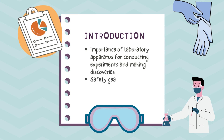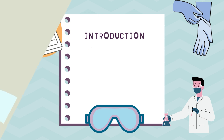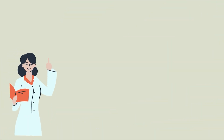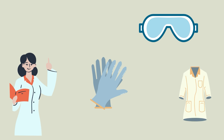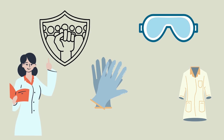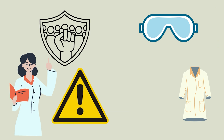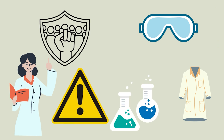Safety gear is one of the major things we often ignore wearing. Wearing safety gear includes goggles, a pair of latex gloves, and a lab coat. This will protect your body from all kinds of dangerous chemicals.